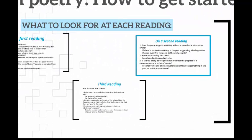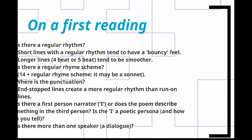Now we need to read the poem more carefully, and I would suggest that we do this three times, looking for slightly different things on each reading. On the first reading, look for practical straightforward things. As we read through the poem, can we spot if there is a regular rhythm? Short lines with a regular rhythm tend to have a kind of bouncy feel. Longer lines with four or five beats tend to be smoother, with a gentler and often more elevated tone.